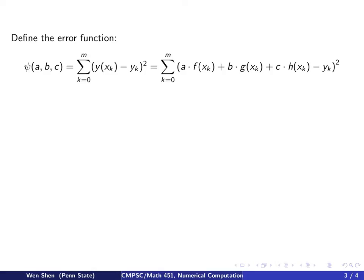And now we define the error function, the psi, which depends on the coefficients a, b, and c. In the same way, the error is the error at every point, so y at x_k minus y_k squared, and we sum them over all of the points.